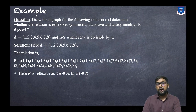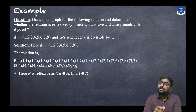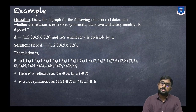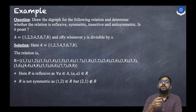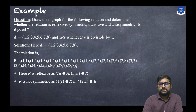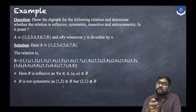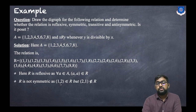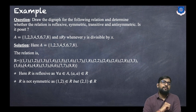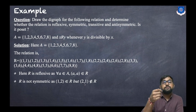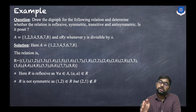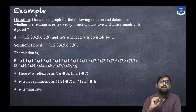R is reflexive because every number divides itself, so for every a in A, the ordered pair (a, a) belongs to R. R is not symmetric — for a counter example, (1,2) belongs to R since 1 divides 2, but 2 does not divide 1, so (2,1) is not in R. Hence it is not a symmetric relation.